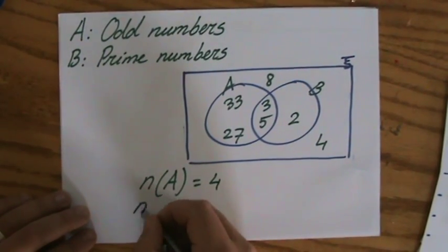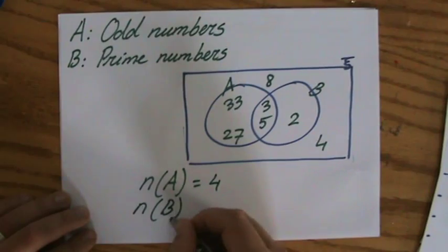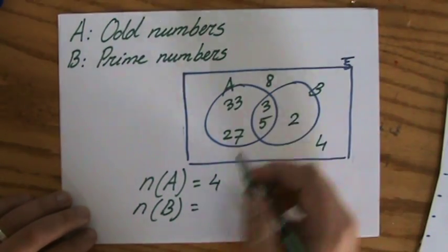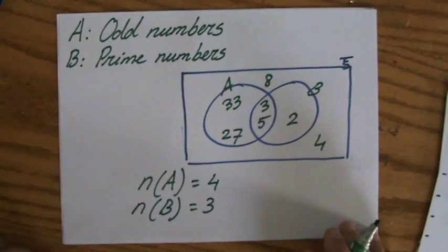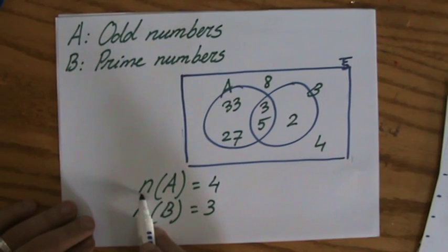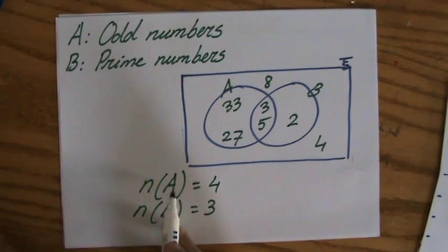I could also say n(B). How many elements do I have in set B? I have one, two, three. So the answer would be three. So that is the first notation you should be familiar with: the number of elements in a particular set.